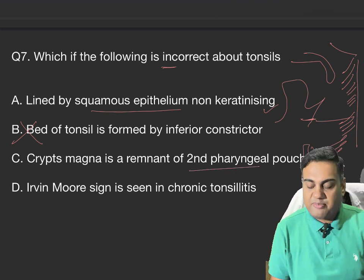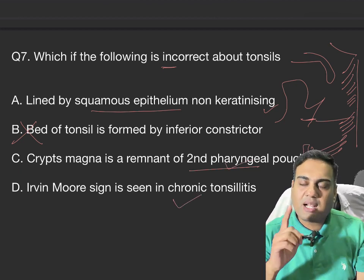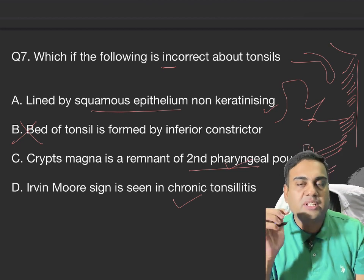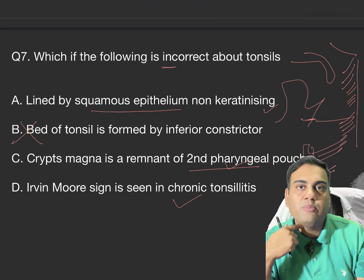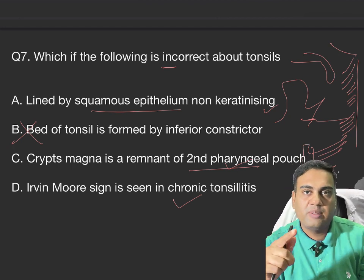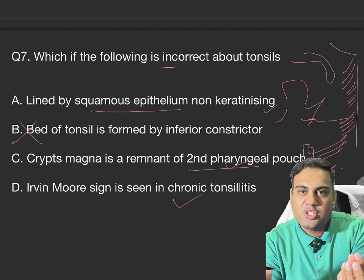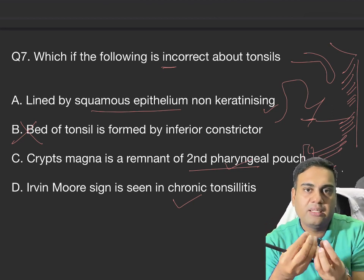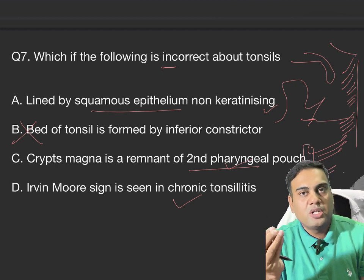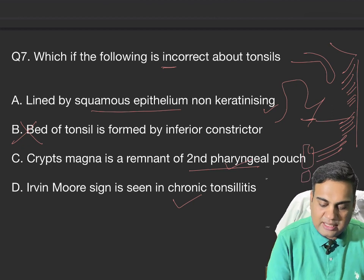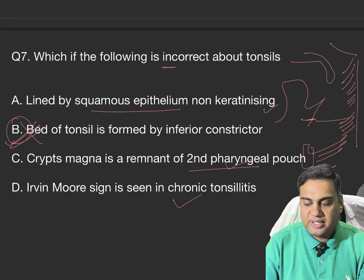Cryptomagna is a remnant of the second pharyngeal pouch — correct. Irvin Moore sign is seen in chronic tonsillitis — correct, it is a cardinal sign along with anterior pillar flushing and jugulodigastric lymph node enlargement. Irvin Moore sign is when pressure on the tonsil causes cheesy material and debris to come out from the tonsillar crypts. So the answer is B: the bed of tonsil is formed by inferior constrictor muscle — that is incorrect.